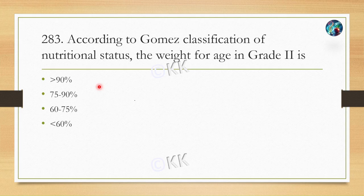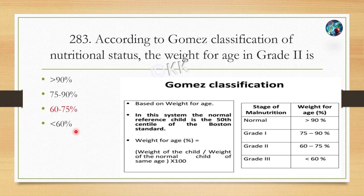The next question involves the Gomez classification. The correct answer is option C, 60 to 75%. The Gomez classification is based on weight for age, and the normal reference child is the 50th centile of the Boston standard. We use a specific formula to measure weight for age.